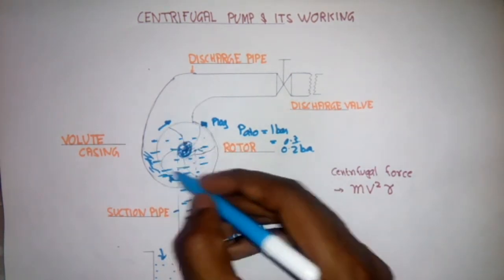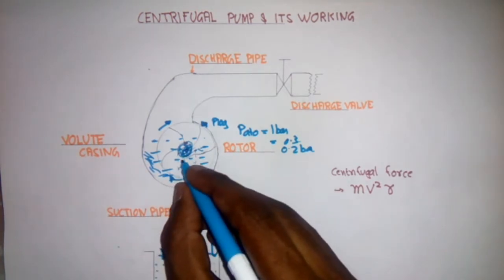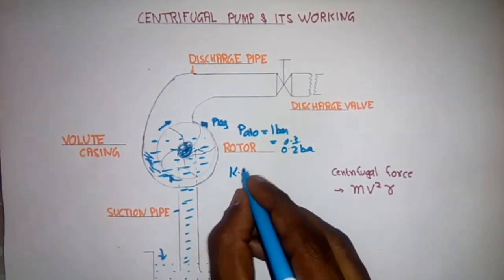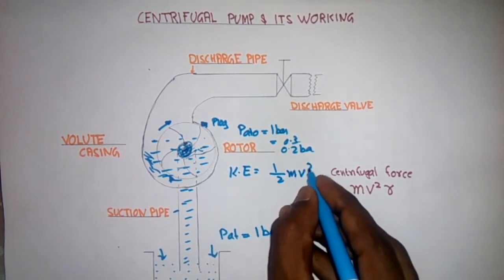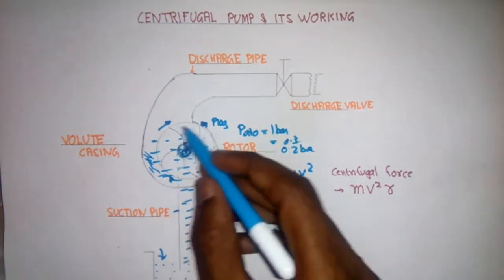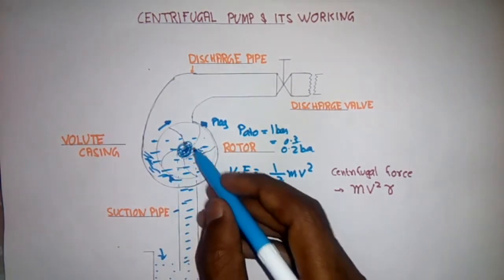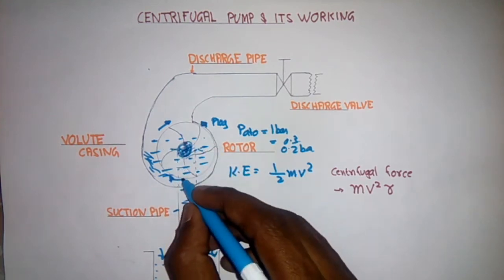Now what the rotor actually does? Rotor imparts kinetic energy into the fluid. KE = 1/2 m v^2, mass and velocity squared. So when the kinetic energy is imparted into the liquid, it starts moving outside.